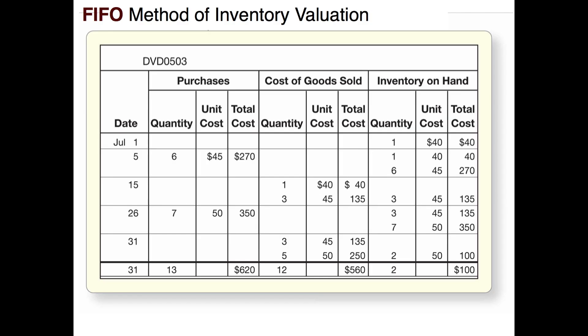So let's look at the FIFO first in first out method of valuing our cost of goods sold as well as what we have left in our ending inventory. I've set up a spreadsheet for one of our products. On July the 1st we had one item left in ending inventory — one unit from June — and that unit cost us $40. That's what we have at the beginning of July.